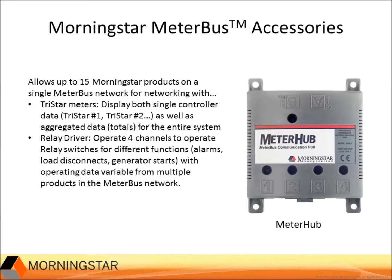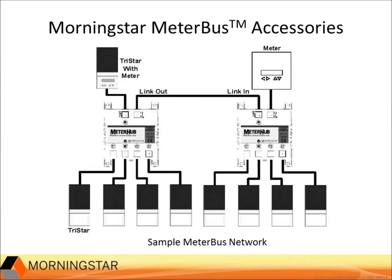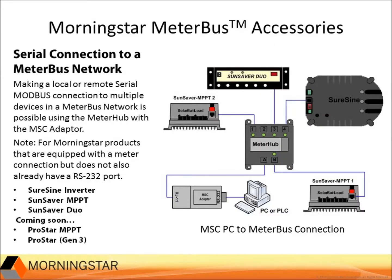The meter hub is for the Meterbus for connecting multiple Morningstar devices to a meter or relay driver. Here's an example of a Meterbus network using two meter hubs. Information from any of the nine TriStar controllers and the aggregated data can be viewed on either of the two meters. Here's an interesting way of converting the meter hub into a Meterbus network for these three products — you just need to program each controller with a different Modbus address. We have not tested this beyond just using it with one meter hub, so we're not sure how many devices can be connected.